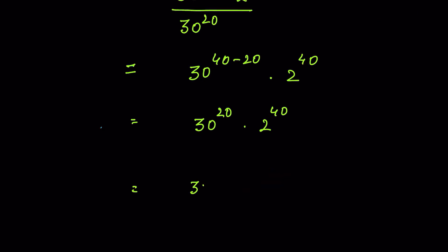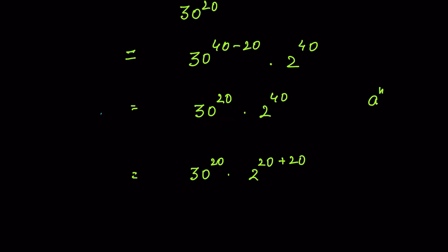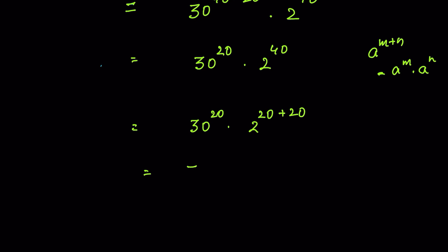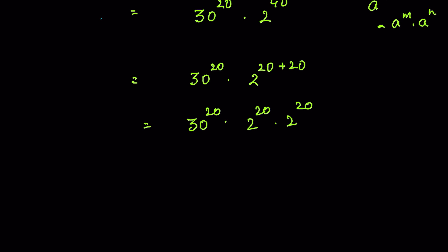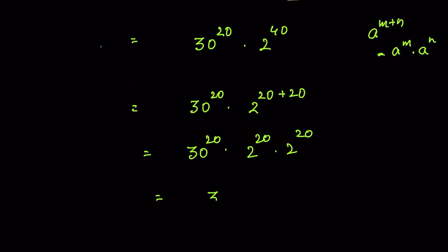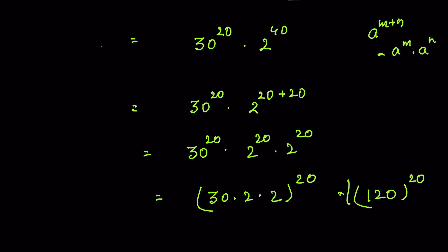We have 30 to the power 20 times 2 to the power 40. We can write 2 to the power 40 as 2 to the power 20 plus 20, and using the identity A^(M+N) = A^M × A^N, this becomes 30 to the power 20 times 2 to the power 20 times 2 to the power 20. Since they share a common exponent, we combine: 30 times 2, whole to the power 20, which is 120 to the power 20. This is our answer.